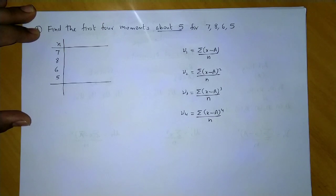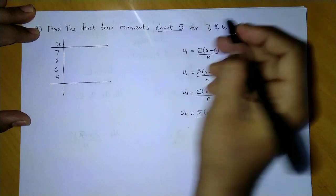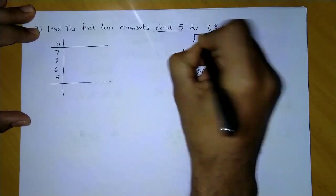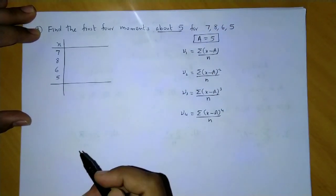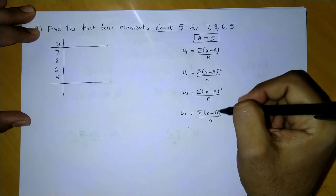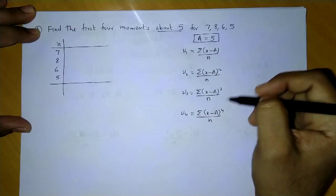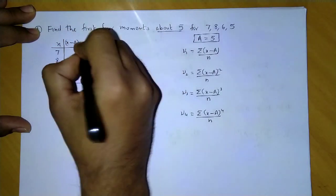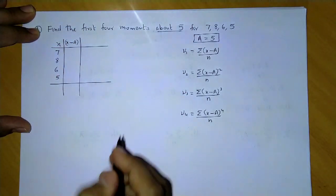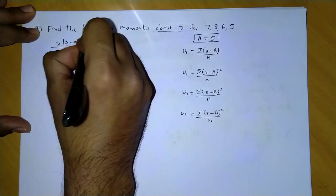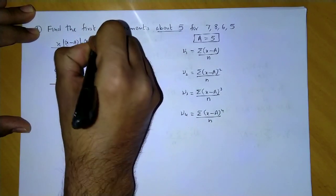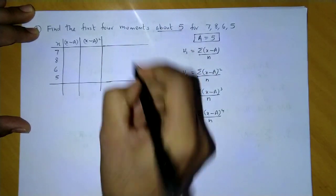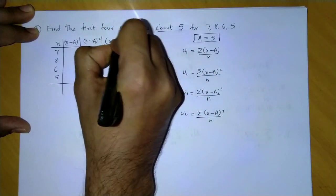Now here we know that the value of a is nothing but 5, right? So we have to find the moments about 5. The first column would be (x minus a), correct? Next column would be (x minus a) the whole square, next would be (x minus a) cube, and the last column would be (x minus a) raised to four.